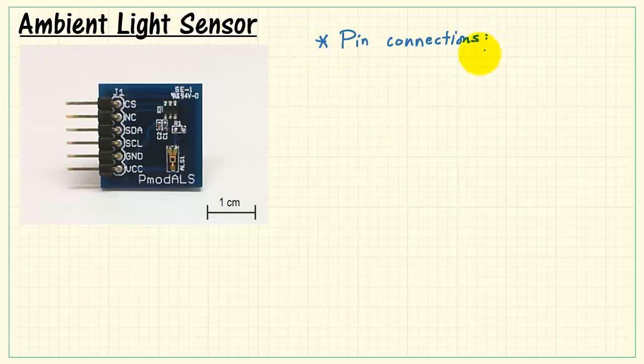Let's review the pin connections that you'll need to connect the PMOD ALS to the MyRio. We have 6 pins all together, beginning with the chip select on top, pin number 1. This is an active low signal.